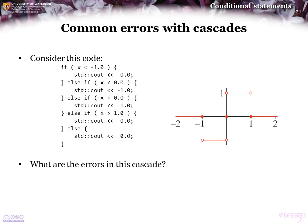On the right you see a square wave. The code on the left attempts to print out the value of that square wave based on the value of X. Take a look at the code and determine whether or not it actually works. If so, justify why; if it does not, explain all of the errors in this cascading conditional statement.